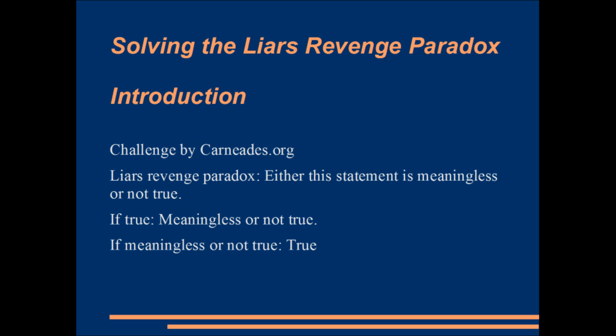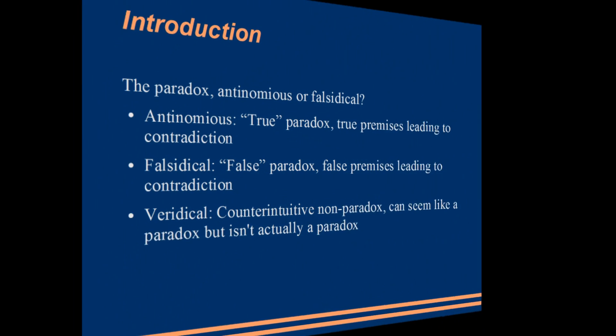It goes: this statement is either not true or meaningless. If the statement is not true or meaningless, then it is true. And if it is true, then the statement is either not true or meaningless. No matter how the statement is classified, it seems that it is not true and true at the same time — a contradiction, which seemingly is unsolvable, is what's called a paradox.